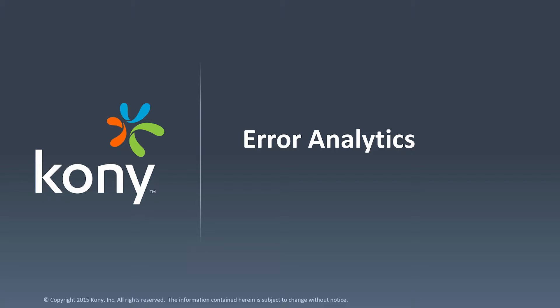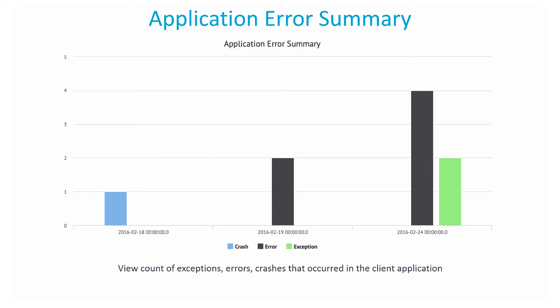We also have reports which provide information on erroneous conditions in the client application. The application error summary report lets you view the count of erroneous conditions that occur in the client application on a time series graph. Exceptions are handled in application code and sent as events to the backend. Unhandled exceptions in the JavaScript code are treated as errors and caught by Kony's global error handler. Crashes are gathered as crash events and sent on the subsequent launch of the application.